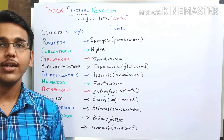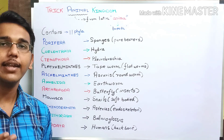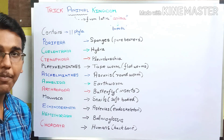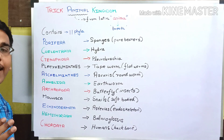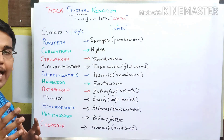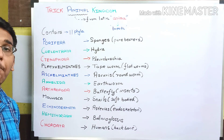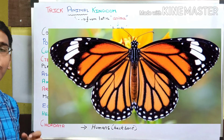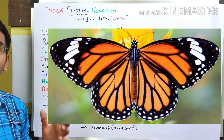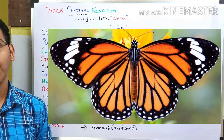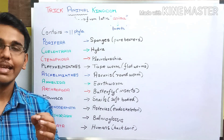Next we have phylum Arthropoda, which is an important phylum because it is the largest phylum of the entire animal kingdom, constituting about seven lakh species. The example of Arthropoda is butterfly. Most organisms belonging to phylum Arthropoda belong to the class Insecta.